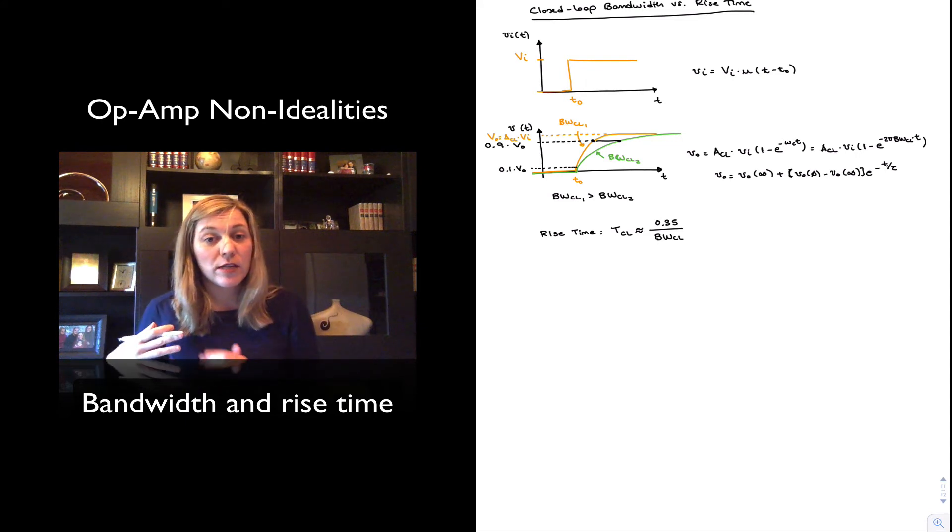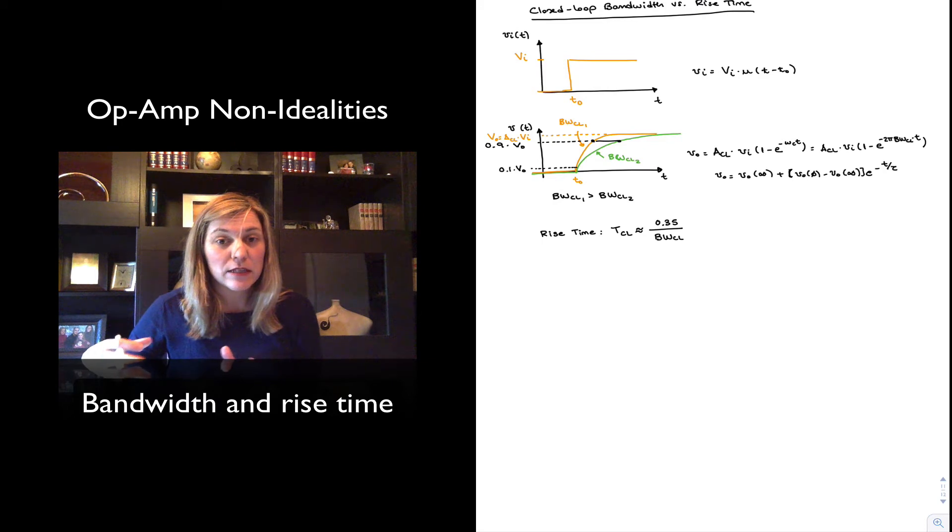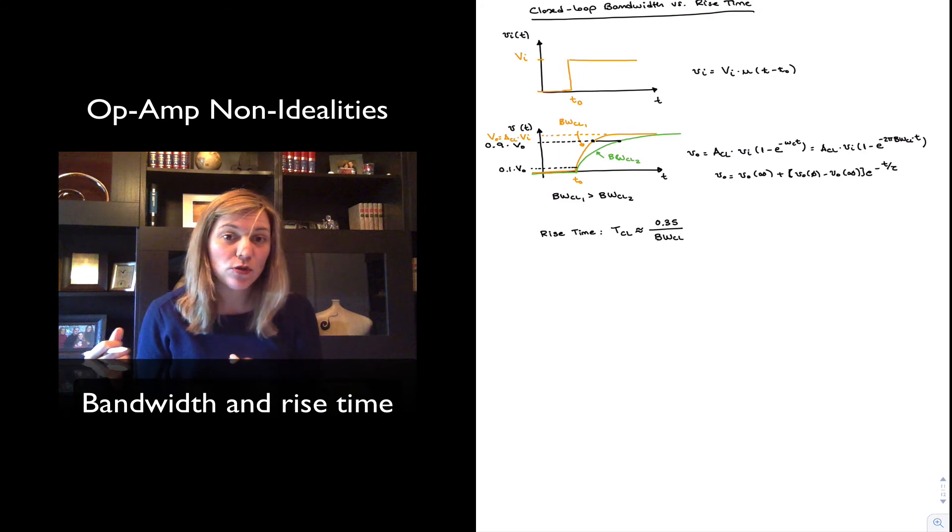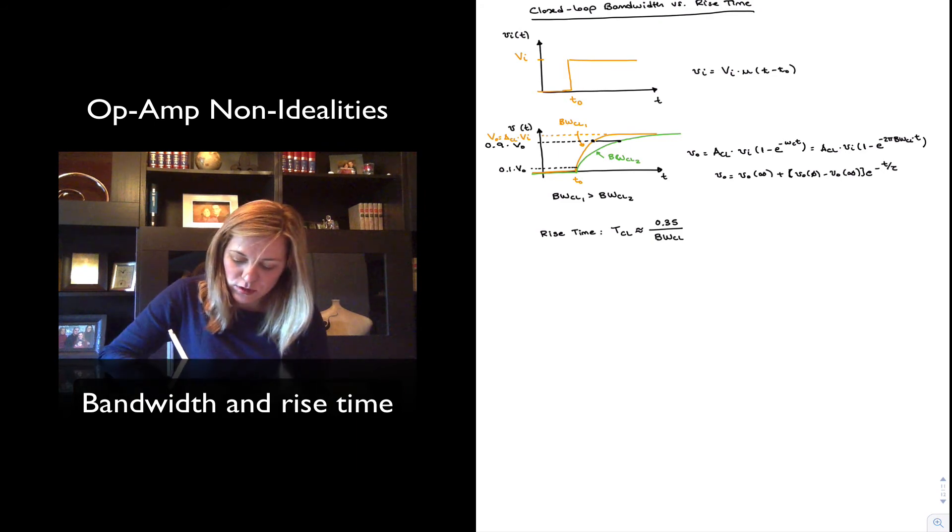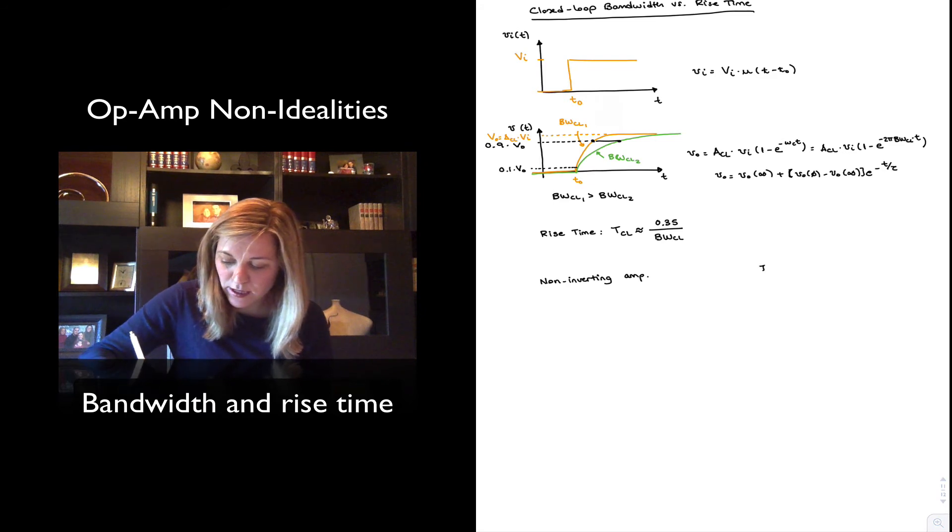Now, we can put together a table and see what will be the rise time expected for a non-inverting and an inverting amplifier of different gains and therefore different bandwidths. So let's imagine for the non-inverting amplifier, kind of like we did earlier for the bandwidth, the non-inverting amp and the inverting amp.